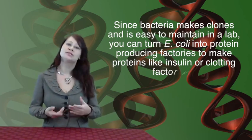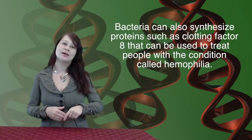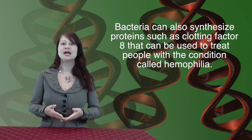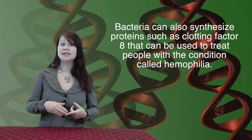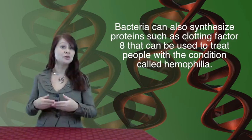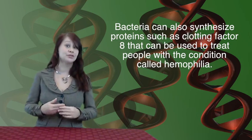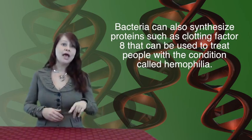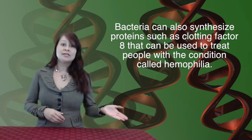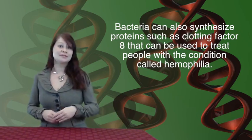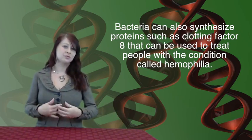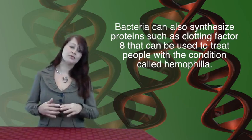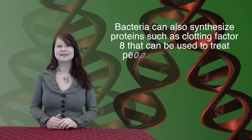One such example is hemophilia. Bacteria can produce a clotting factor called Factor VIII, so people with hemophilia can be treated without needing a blood donor. I want to now move on and discuss how we insert genes into the plasmid to create recombinant DNA.